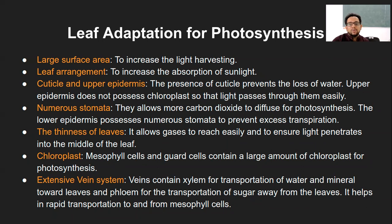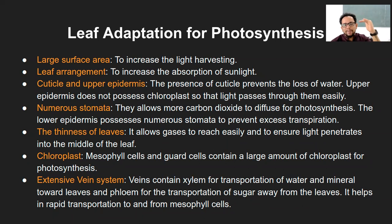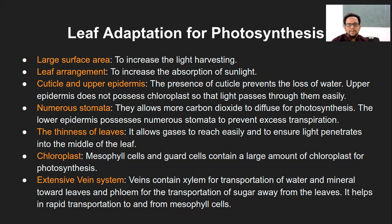If the upper epidermal cells possessed chloroplast, all the light would be entrapped in those cells and would not penetrate deeper into the leaf. The leaf has different layers: upper epidermis, palisade mesophyll, spongy mesophyll, and lower epidermis. If the upper epidermis absorbed most sunlight, it would not penetrate to the other layers. The cuticle and epidermis are designed so that maximum sunlight absorption happens and light can pass through them easily.